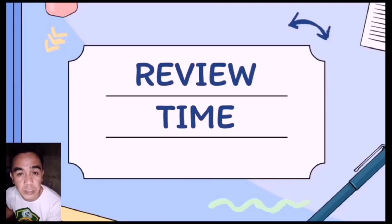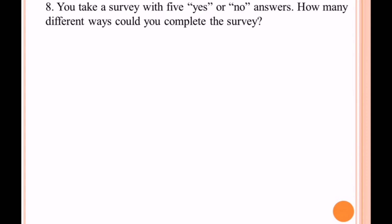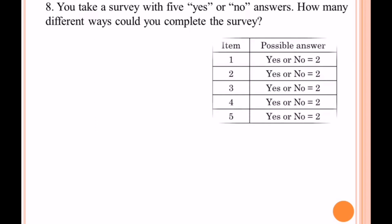It's review time. Problem number eight is about a tabular problem. You take a survey with five yes or no answers — how many different ways could you complete the survey? There are five questions to answer. Let's set up a table with items one through five, where each item can be answered either yes or no.